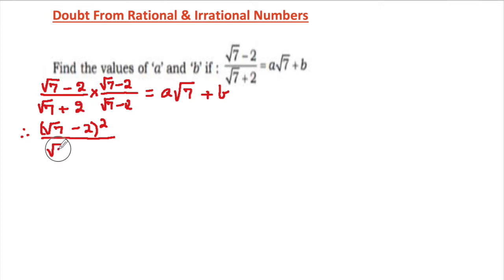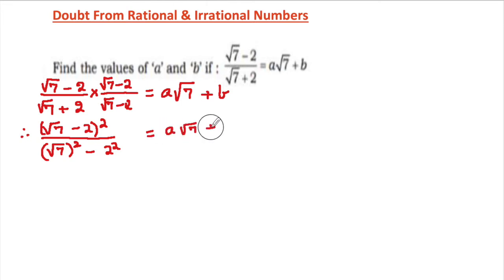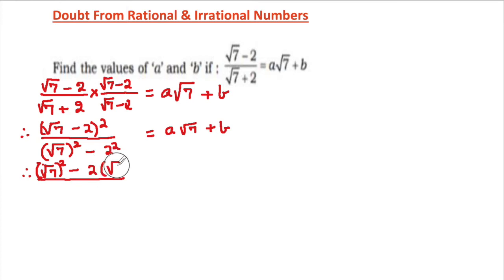Here our value of a is √7 and the value of b is 2, so it will be a squared, meaning √7 whole squared, minus b squared, meaning 2 squared. On the right hand side we will keep this as it is. So in the numerator we will have √7 whole squared minus 2 times √7 times 2 plus 2 squared.